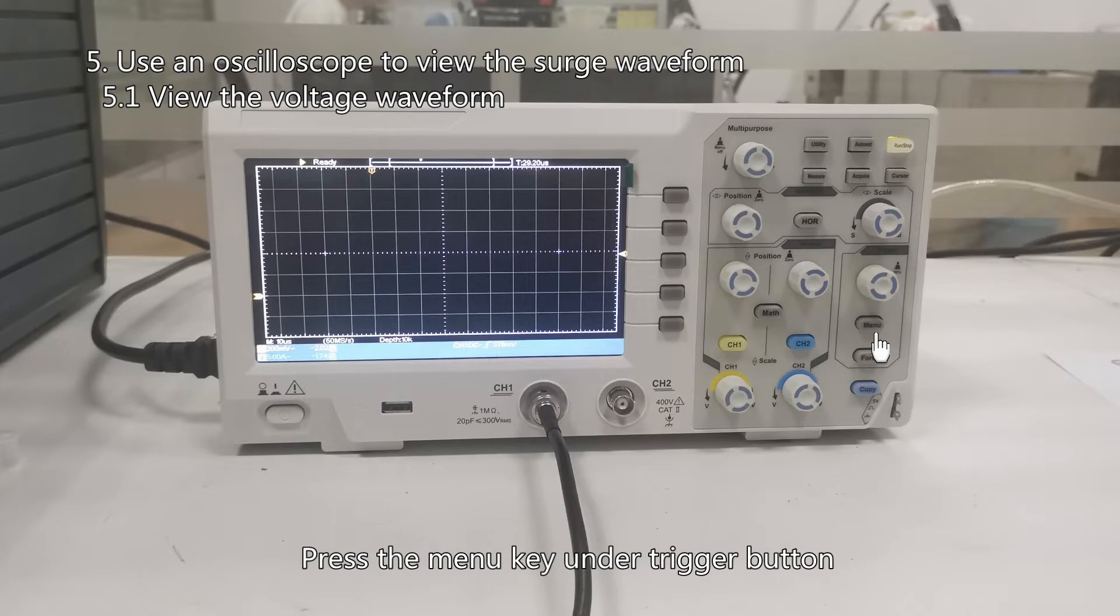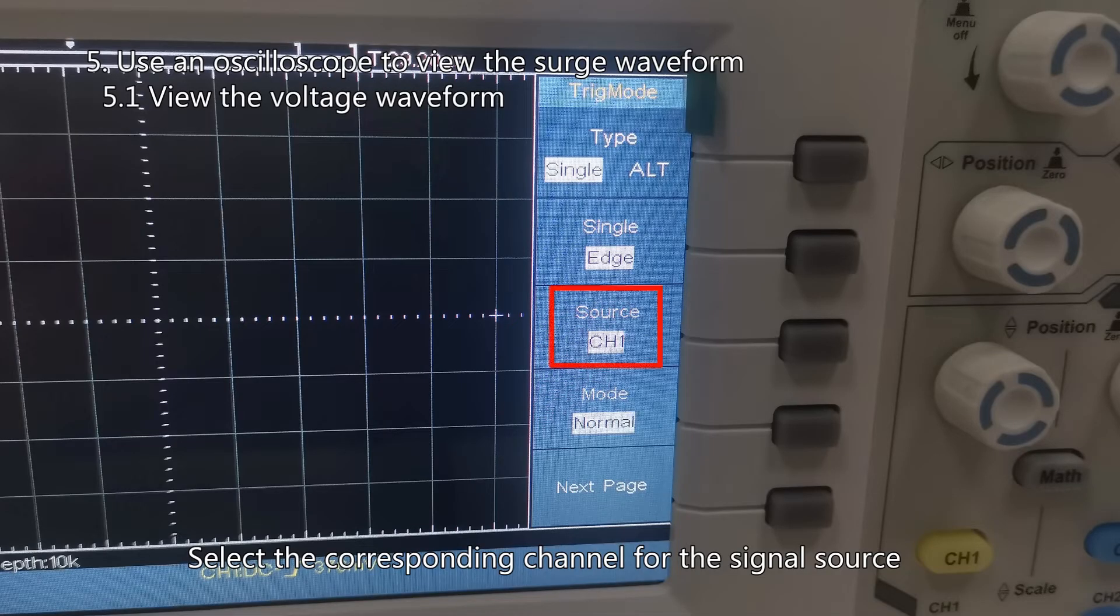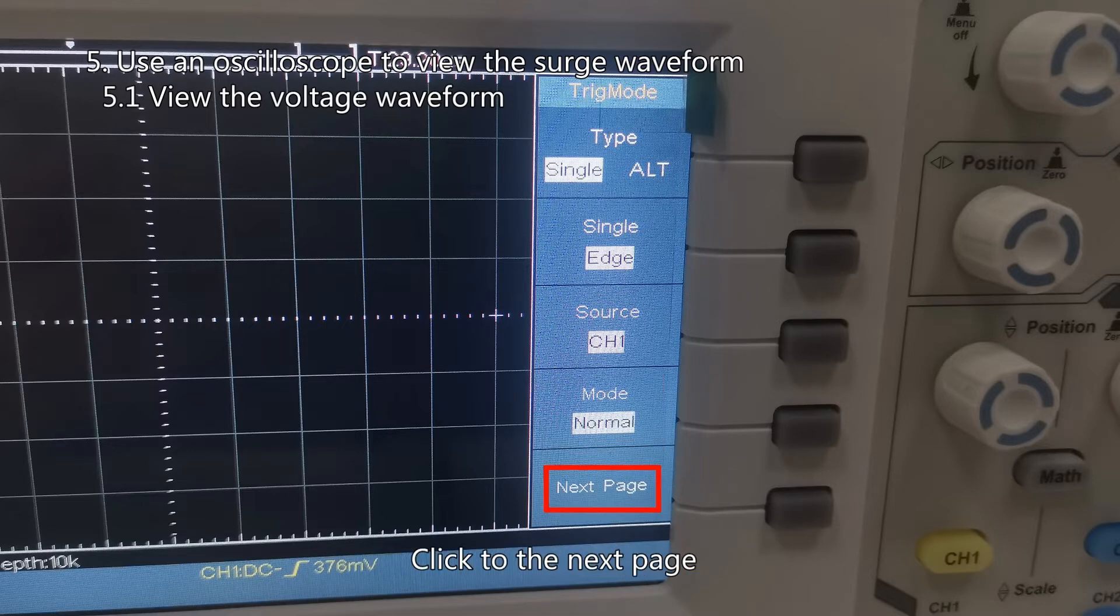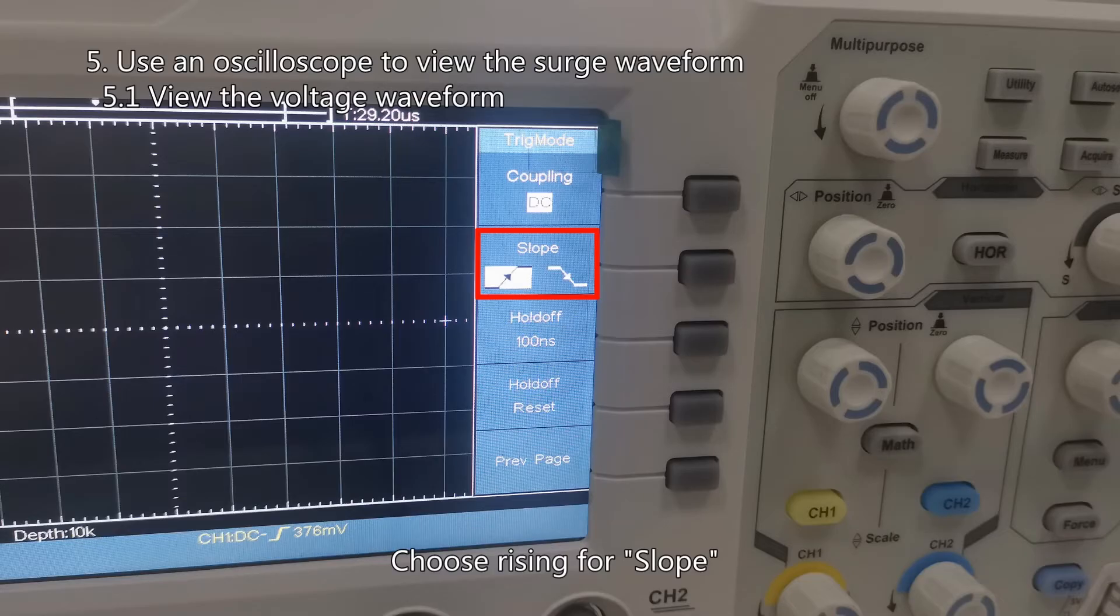Press the menu key under the trigger button. Select the corresponding channel for the signal source. Select normal for trigger mode. Click to the next page. Choose rising for slope.